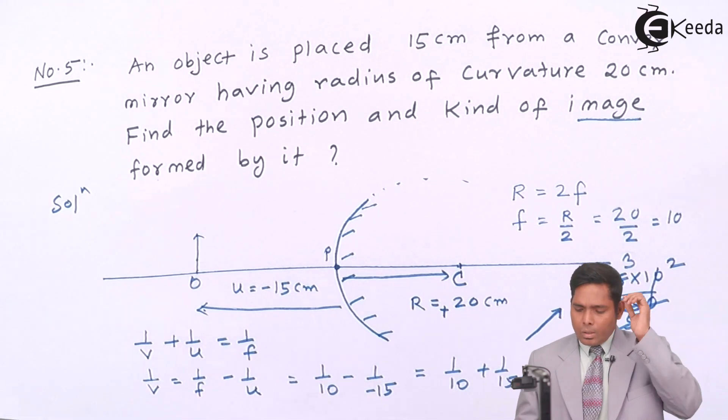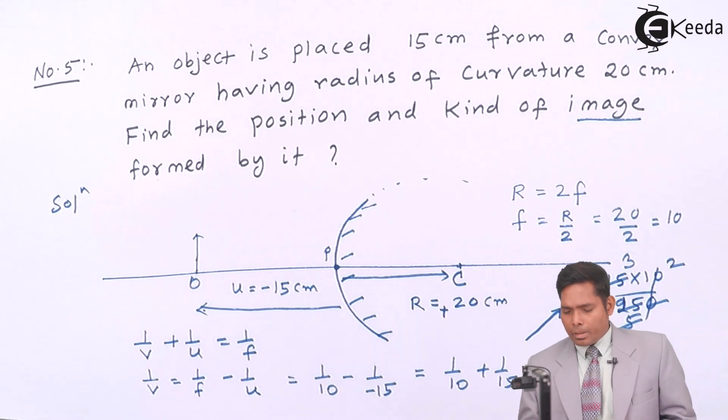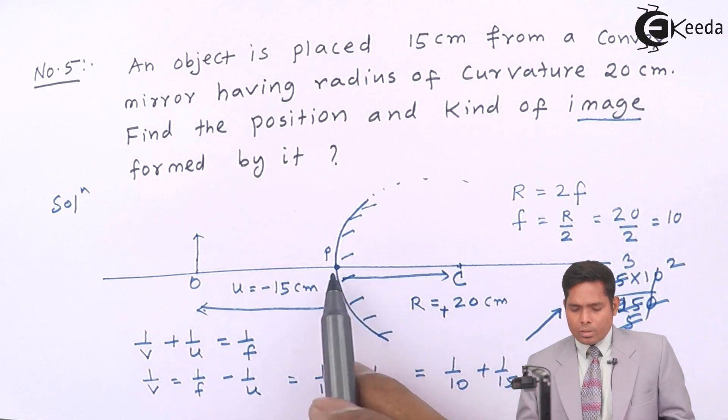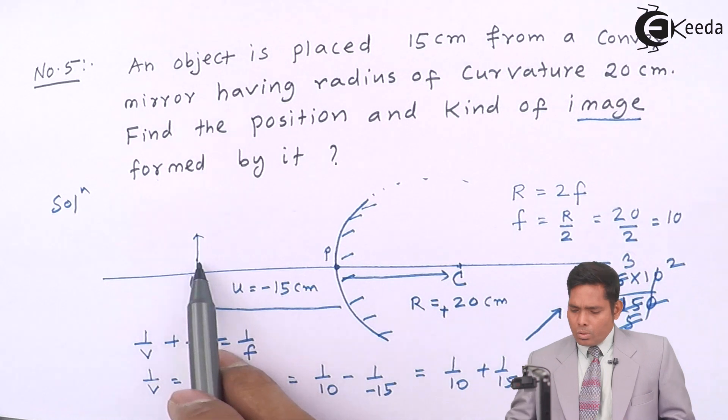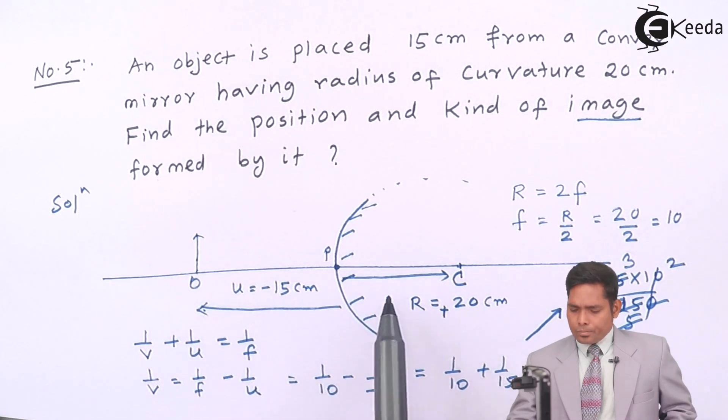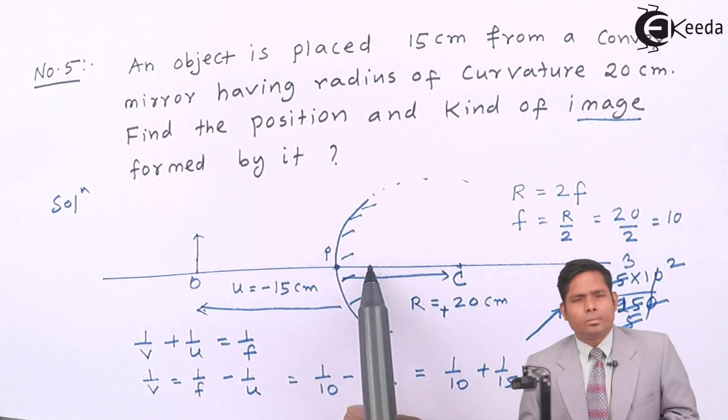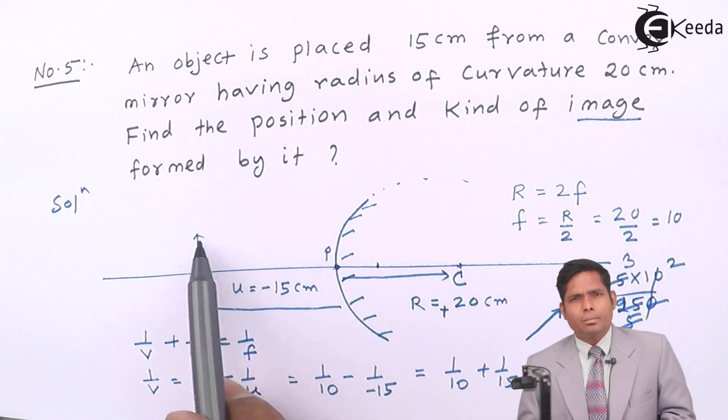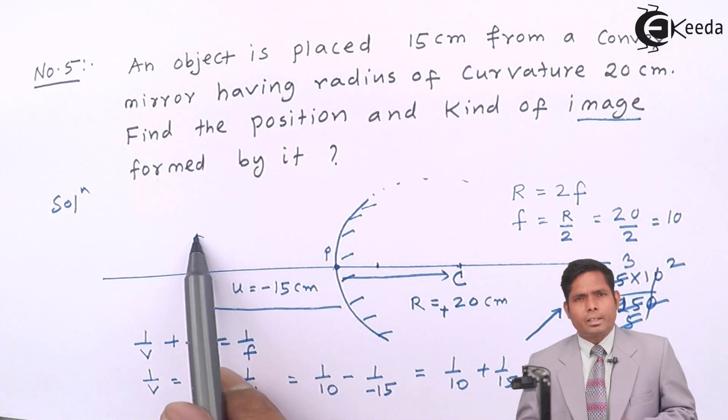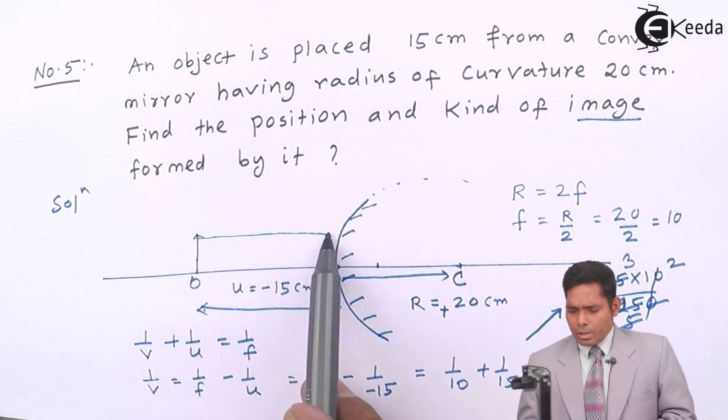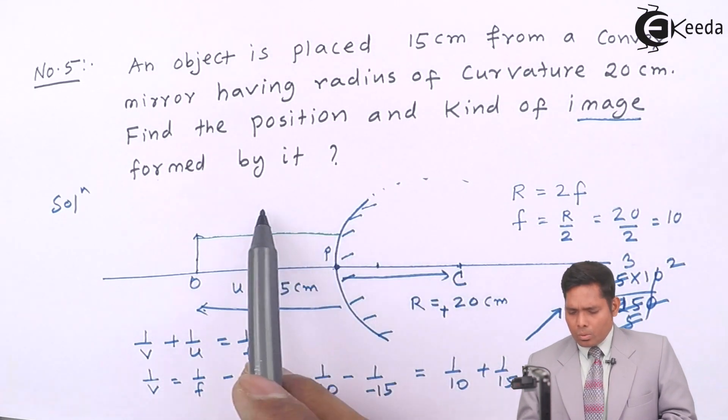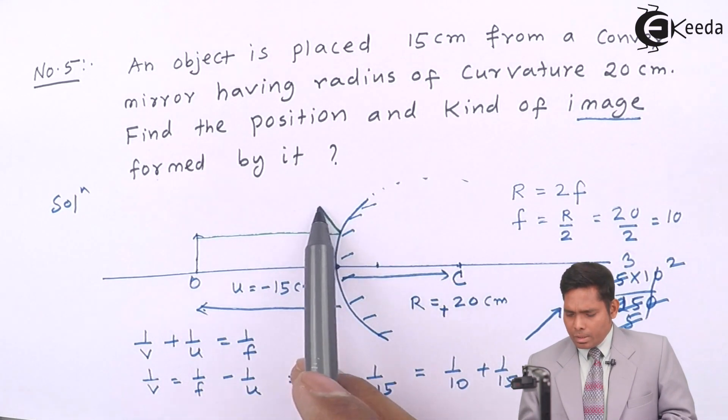Now, since v is positive, that means the image is formed towards the right side, not towards the left side. Let us also see, though in numericals you don't have to draw the diagram, but let us visualize where it is formed. If this is 20, the object is placed somewhere here, and the image is formed 6 centimeters.